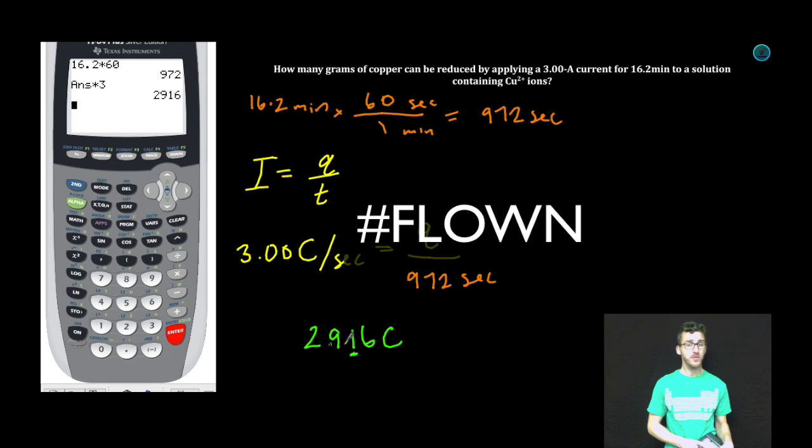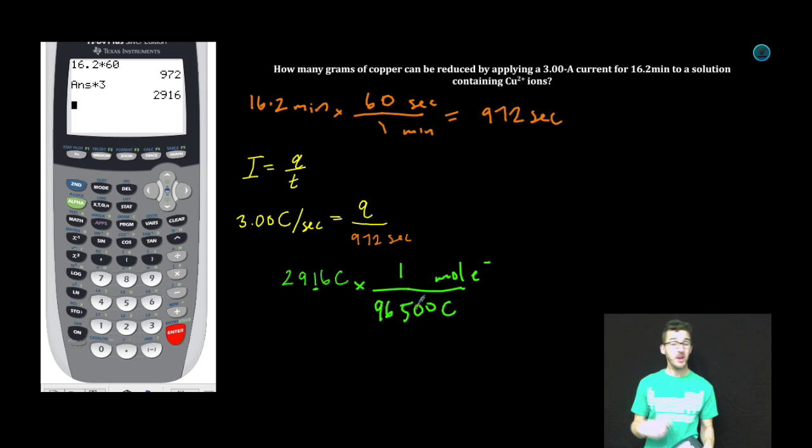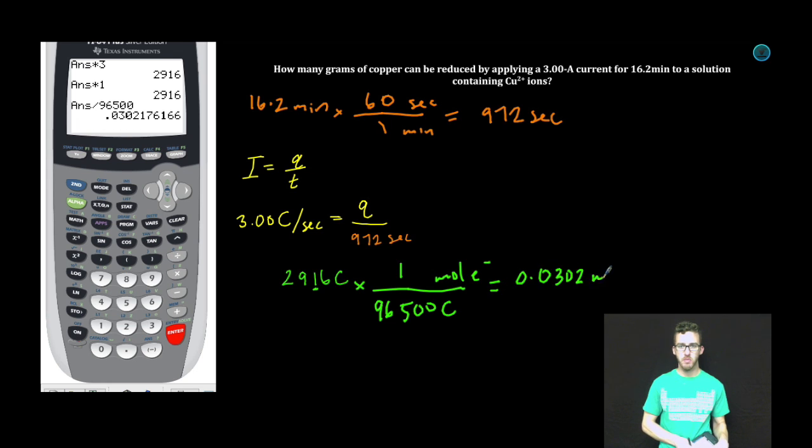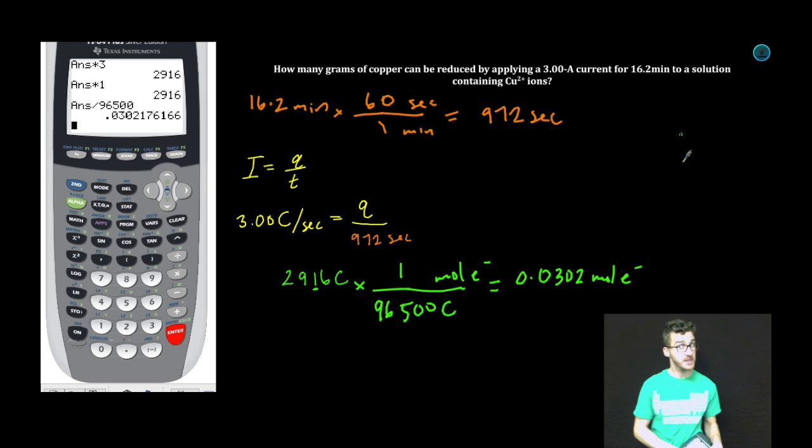That's the charge that flowed through my cell in 972 seconds. What we want to do now is take that amount of charge and convert it to moles of electrons. And in every mole of electrons, there's 96,500 coulombs worth of charge. So before I even do this calculation, I should recognize that I'm going to have less than a mole of electrons that have flowed through my cell. I end up with 0.0302 moles of electrons that have flowed through my cell in those 16.2 minutes.